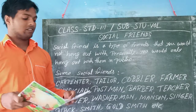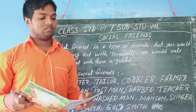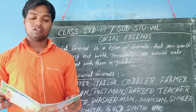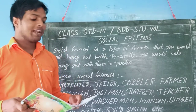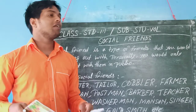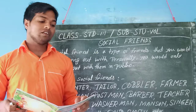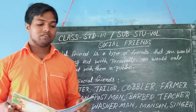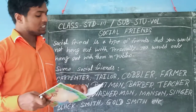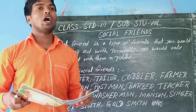Next, Tailor. A Tailor makes clothes for us to wear. A Cobbler makes our shoes for us. A Farmer grows food on the farm for us to eat.